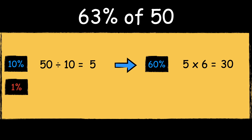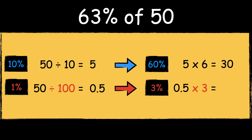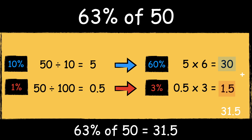Next we need to work out 1% of 50. To find 1% of a number we divide it by 100. 50 divided by 100 is 0.5. We can then multiply the answer by 3 to find 3%. 0.5 times 3 is 1.5. Now that we have found 60% of 50 and 3% of 50, we add the answers together to get 63%. 30 add 1.5 is 31.5, so 63% of 50 is 31.5.